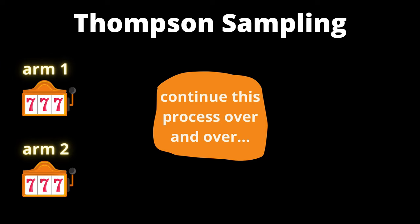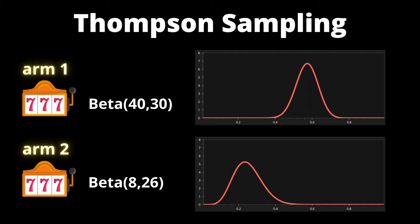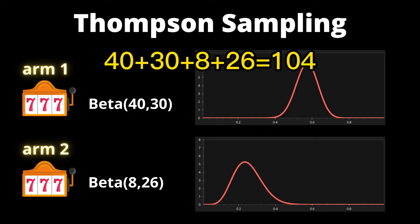As the number of time steps increases, the posterior distribution should get closer and closer to the real values. For example, at time step 100, we could get beta 43 30 for arm 1 and beta 8 24 for arm 2. Note that those four numbers should add up to 104 since we start with beta 1 1 for both arms.